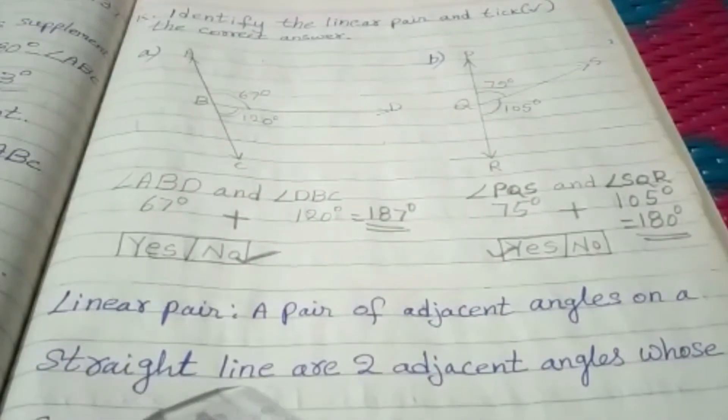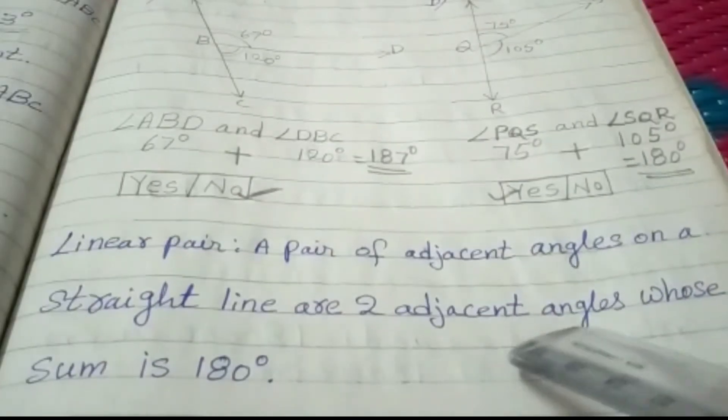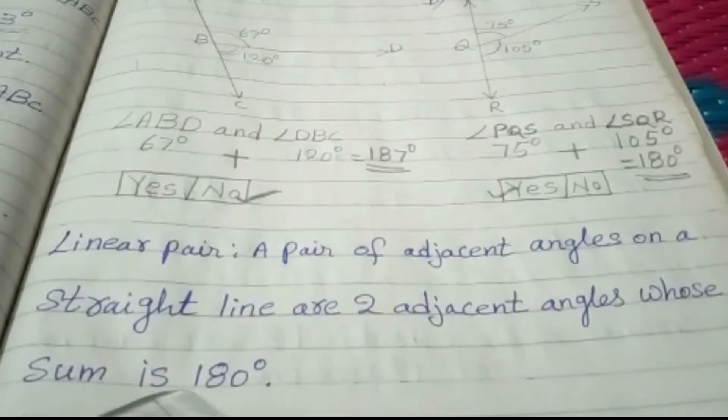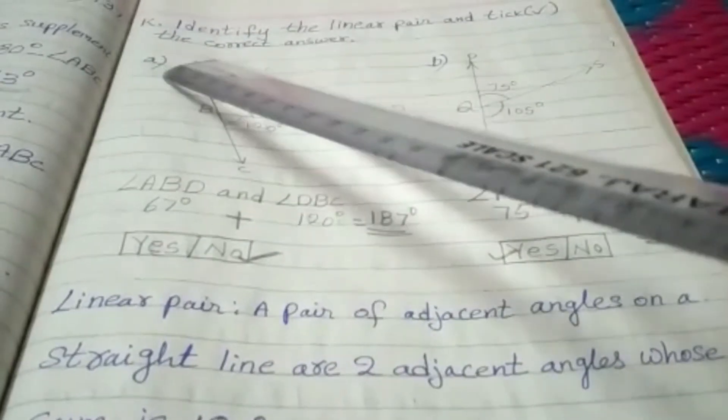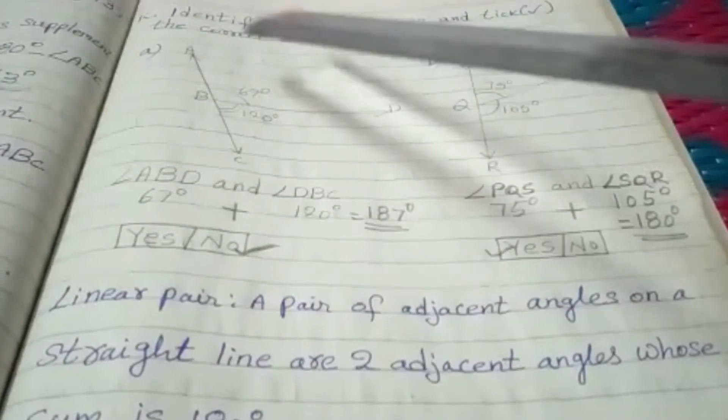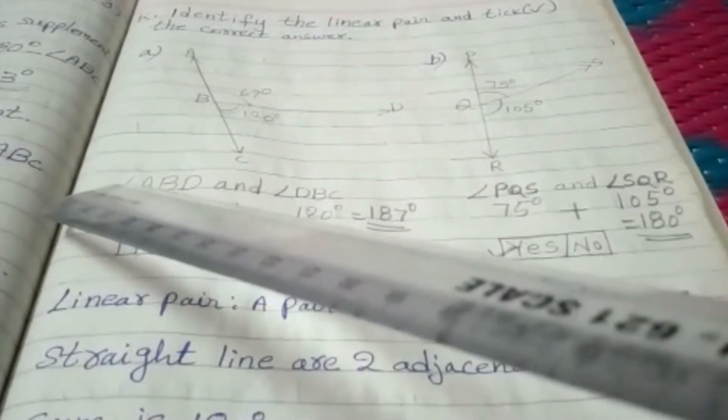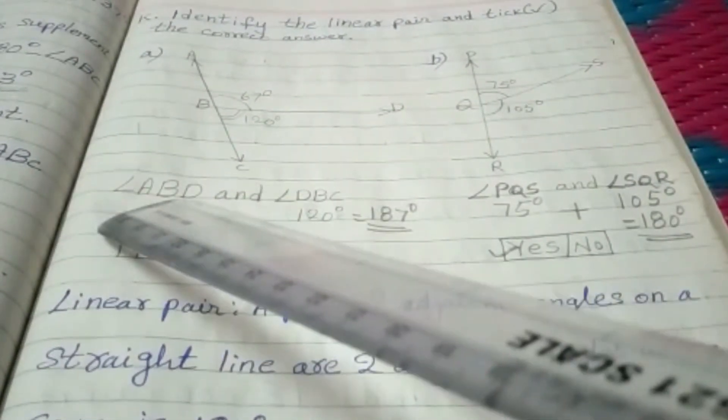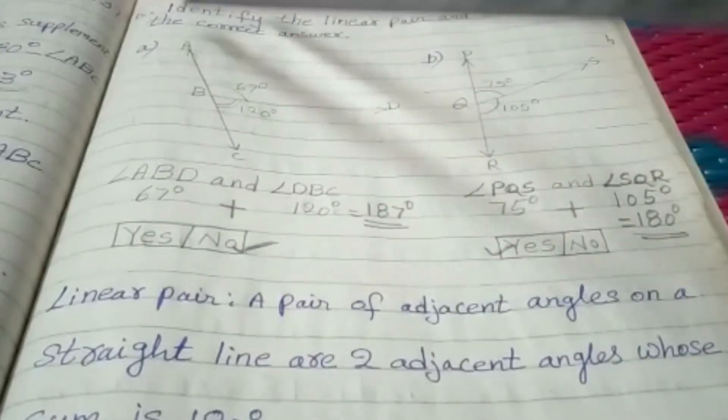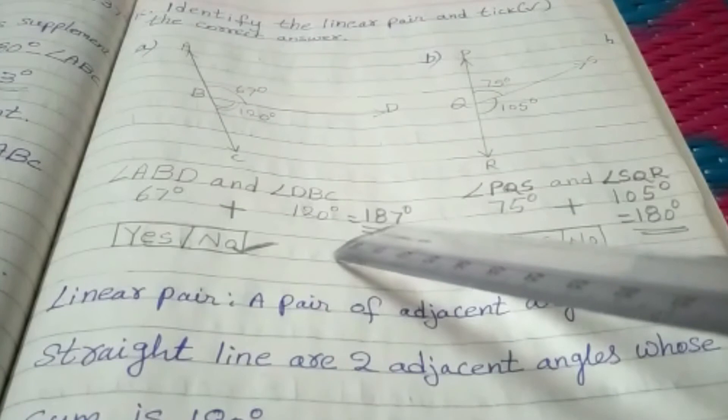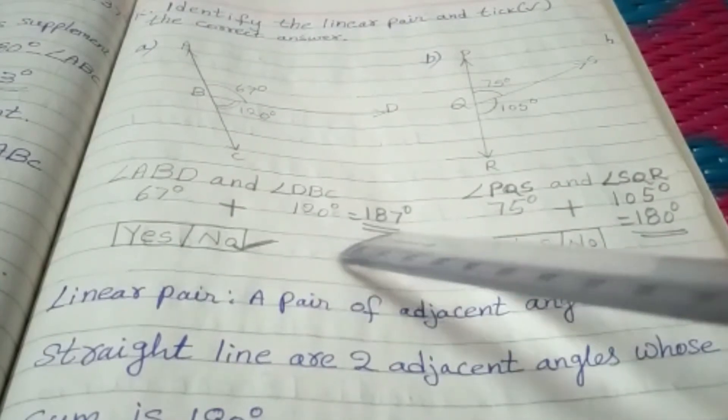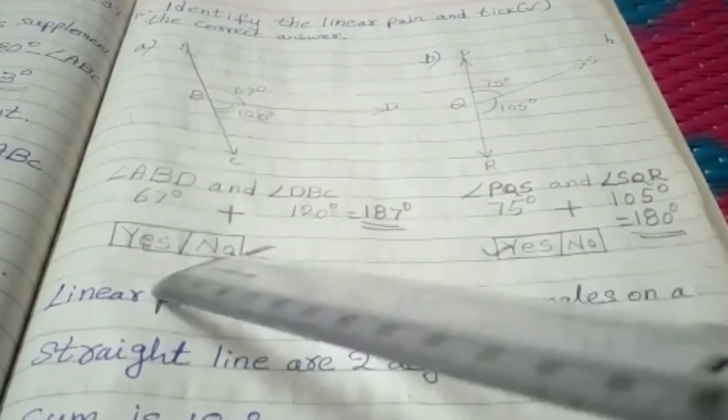The sum of angle ABD and angle DBC is equal to 187 degrees. So, this is not a linear pair. So, put the tick mark at no.